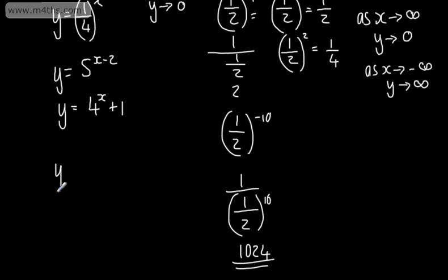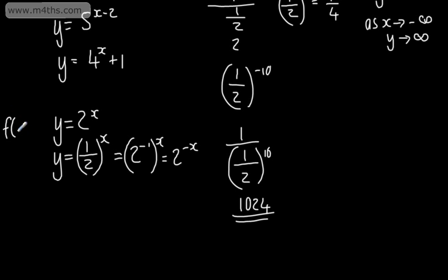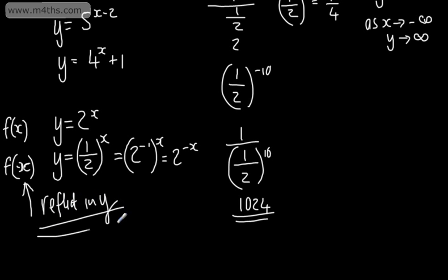There is a relationship between y = 2^x and y = (1/2)^x in terms of a graph transformation. We can write (1/2)^x as (2^(−1))^x, and using the index law a^m raised to n equals a^(mn), this gives 2^(−x). So if f(x) = 2^x, then (1/2)^x = f(−x), which means we have a reflection in the y-axis. It has all the same traits, essentially in reverse.